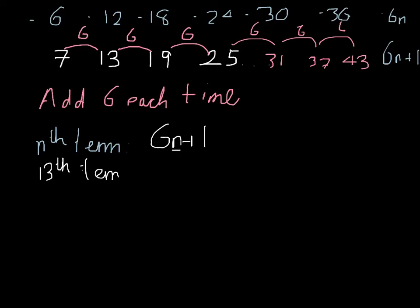So 6 multiplied by 13, add 1, would tell you what the 13th term of the sequence is. Now, 6 multiplied by 13 is equal to 78. And 78, add 1, would be 79. So that is the 13th term, 79.